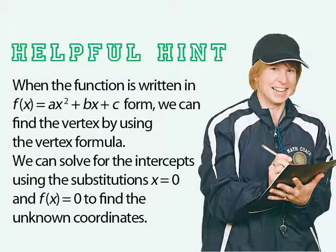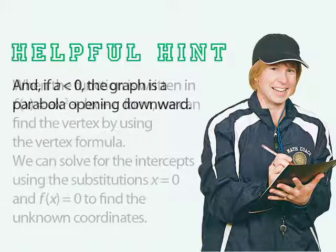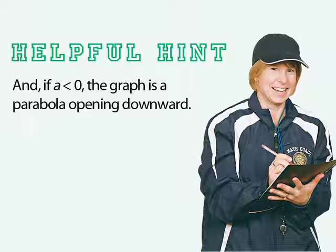Let's look at our helpful hint. When the function is written in f(x) = ax² + bx + c form, we can find the vertex by using x = -b/(2a) to find the x-value of the vertex. We can solve for the intercepts using the substitutions x = 0 and f(x) = 0 to find the unknown coordinates. And if a is less than 0, the graph is a parabola opening downward.